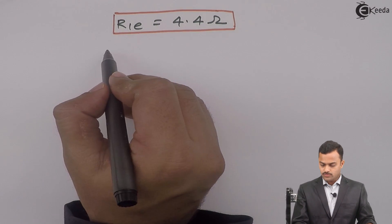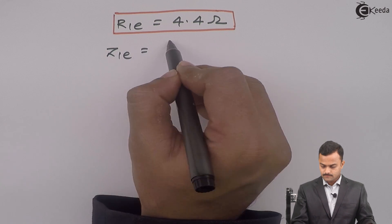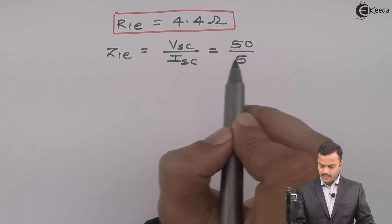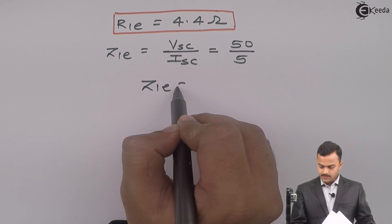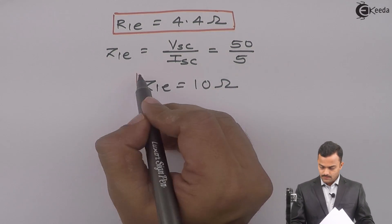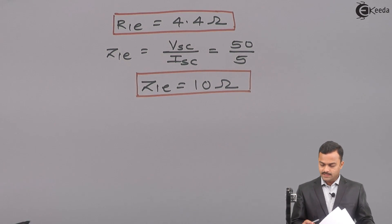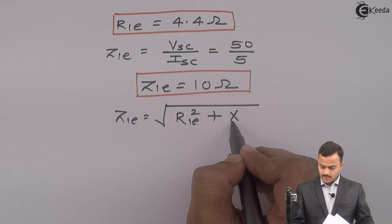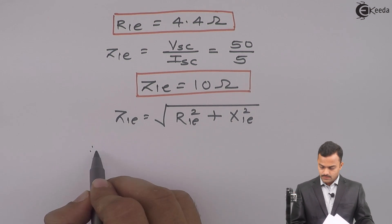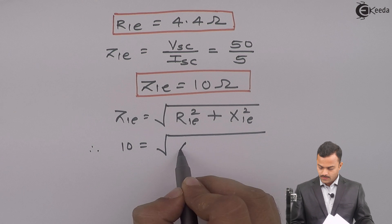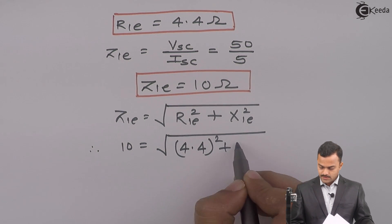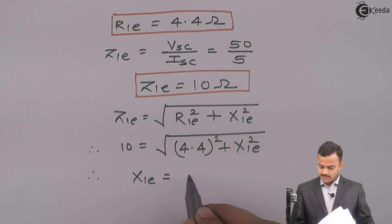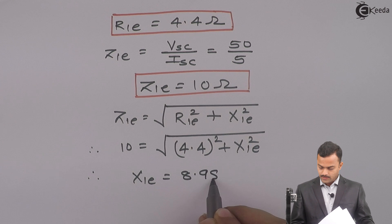Since V_SC and I_SC are known, we can get Z₁E. Z₁E = V_SC / I_SC = 50 / 5 = 10 Ω. Since Z₁E = √(R₁E² + X₁E²), the only unknown is X₁E. Solving: X₁E = √(10² − 4.4²) = 8.98 Ω.